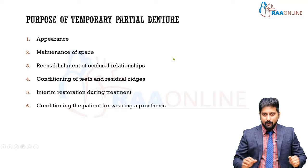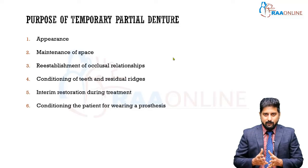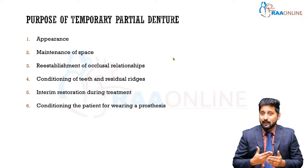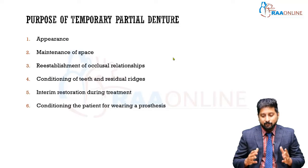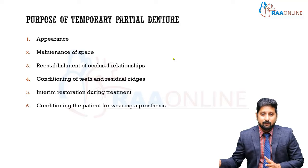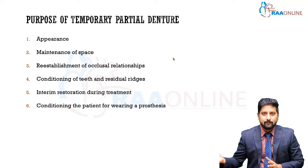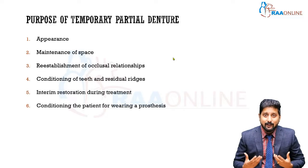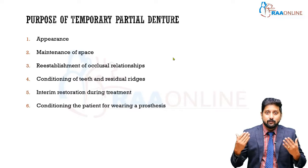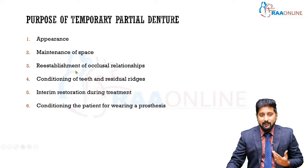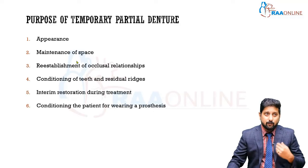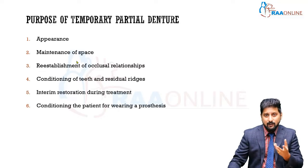Now, why do we give a temporary partial denture? The first purpose is appearance — if the definitive treatment plan spans a long duration and the patient won't get the final replacement until the end, especially for anterior teeth, you must provide a temporary partial denture for aesthetics. Other purposes include maintenance of space and re-establishment of occlusal relationship.